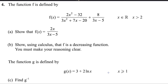This is question number 4 from Pearson and Excel A-level exam, Pure Math 3. The exam was taken in January 2024. The function f is defined by f of x equals 2x squared minus 32 divided by 3x squared plus 7x minus 20, plus 8 over 3x minus 5, where x is greater than 2, x belongs to real numbers. Show that f of x equals 2x over 3x minus 5.